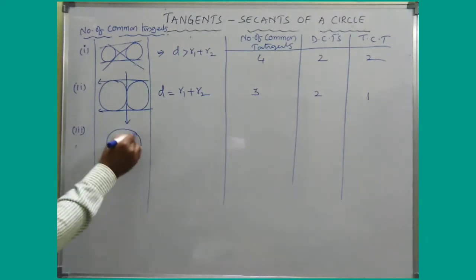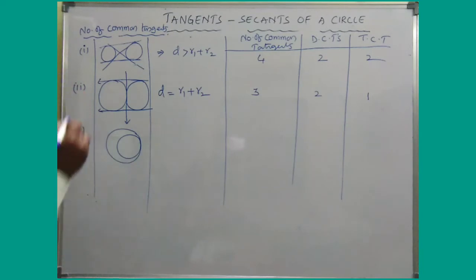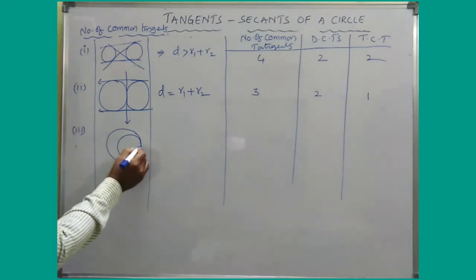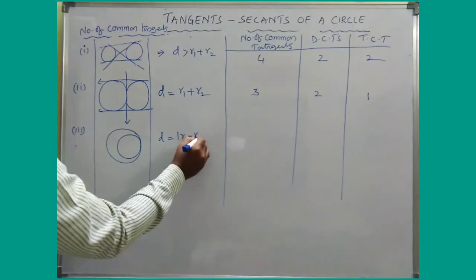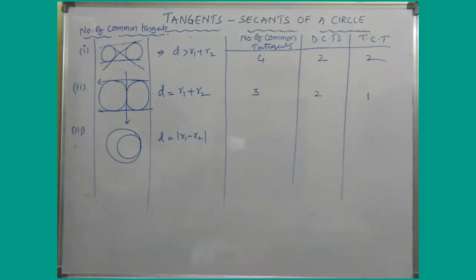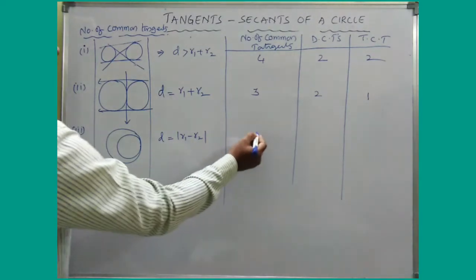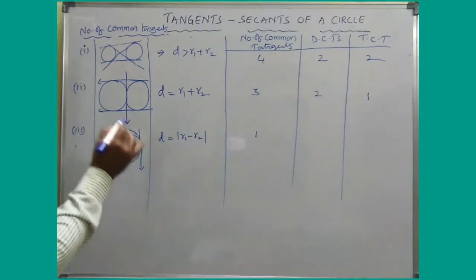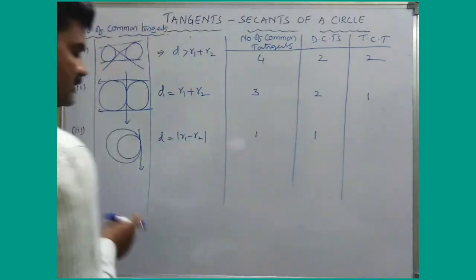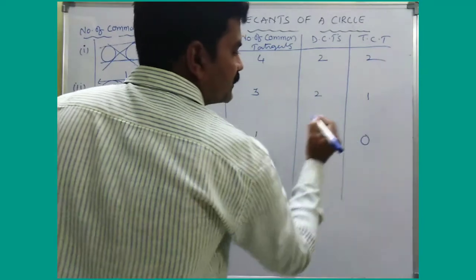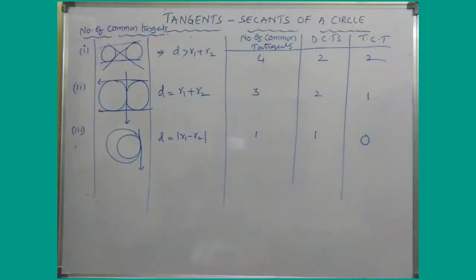Position number three: when the two circles touch each other internally. The condition is D equals |R1 minus R2|. We can draw only one common tangent, and for this common tangent both circles are on the same side — same side means it is a direct common tangent. We cannot draw any transversal common tangent in this position.